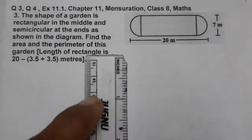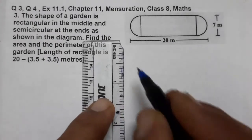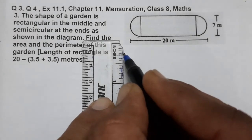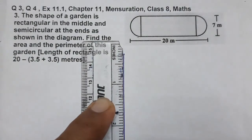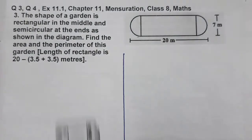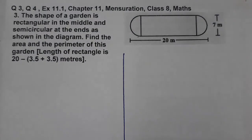We have to split this into two parts — one for area and one for perimeter. So first of all, we will find the area.